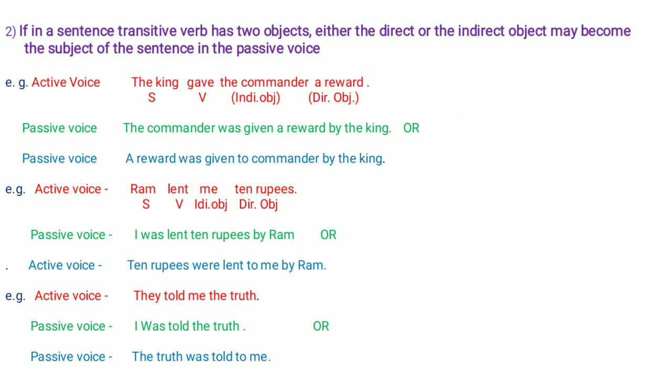Next example: 'They told me the truth.' What did they tell? 'The truth' — so 'the truth' is the direct object. To whom? 'To me' — so 'me' is the indirect object. Taking indirect object first: 'I was told the truth.' If 'by them' is not added, it is also okay. Taking direct object as subject: 'The truth was told to me by them.' — this is also acceptable.